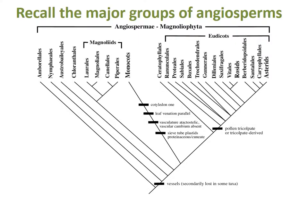Now, if you recall the major groups of angiosperms — I hope that this is familiar by now — we have the ANA grade, the magnoliids, the monocots, and the eudicots. The eudicots make up about 70% of the diversity of angiosperms, and we'll be talking about this clade for the rest of the semester.